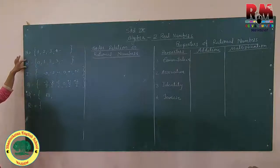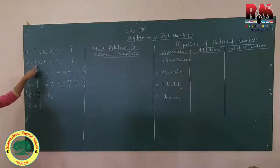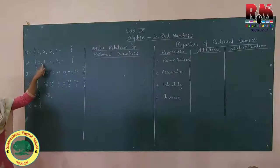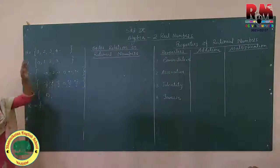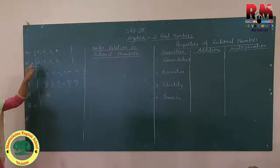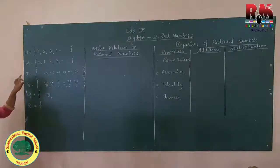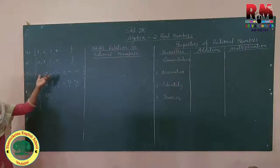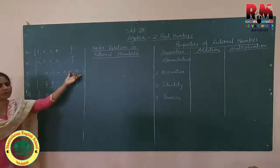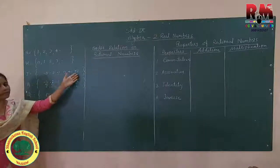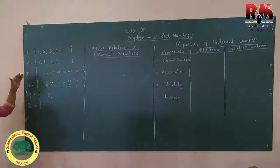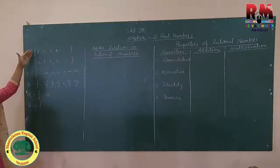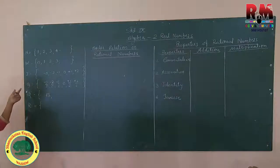Second, we have seen in the previous lesson, that is the set of whole numbers. The set of whole numbers starts from 0 — 0, 1, 2, 3, 4, and so on. Third, the set of integers contains negative numbers, positive numbers, and 0. Infinite numbers are present in the set of integers; in all sets, infinite numbers are present.